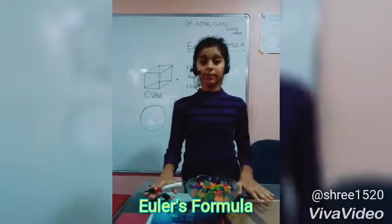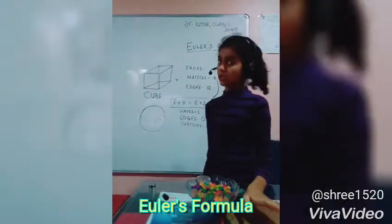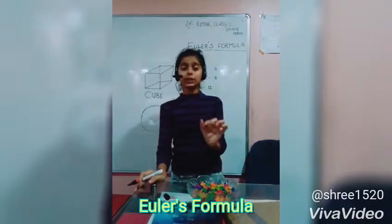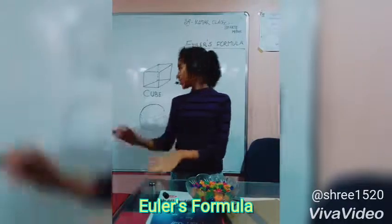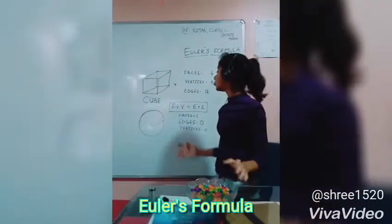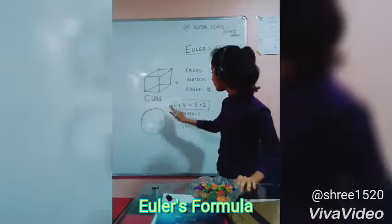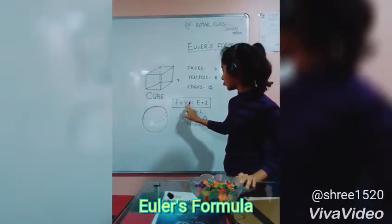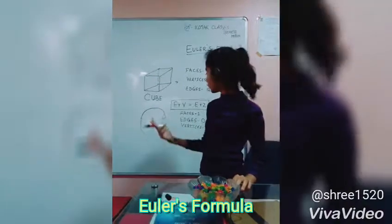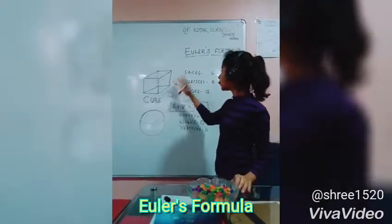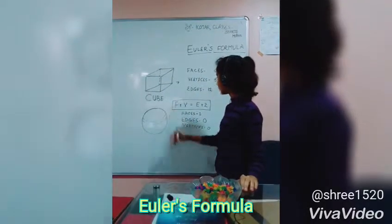So now we come to the main point — Euler's formula. Euler's formula is a fixed formula given by mathematician Sir Euler. He gave the formula: F plus V equals E plus 2, where F stands for faces, V for vertices, and E for edges. When we put in the values, the formula will be proved.